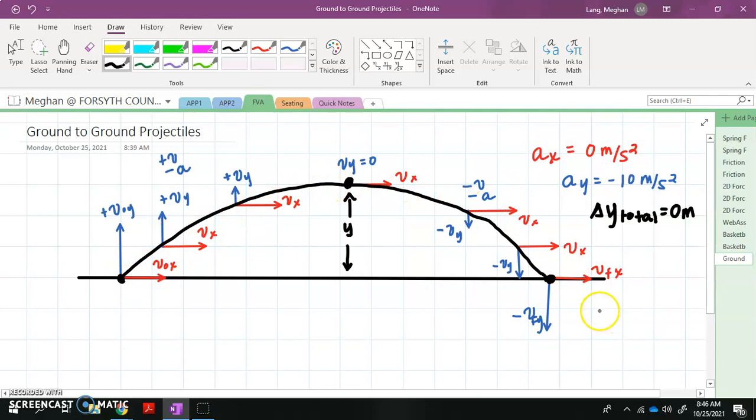So these projectiles, when they're ground to ground, everything is super symmetrical. So it is a true parabola, which means that the time it takes to get from here to the top would be the same as the amount of time it takes to get from the top to the bottom. So if you're able to find this max height or you're given this max height, in theory, you could find the time it takes to get from here to the max height where the velocity in the Y direction is zero and then multiply that by two to get the total time. So keep that in mind as you're answering some of these questions. Remember that this is a parabola and everything is super symmetrical.